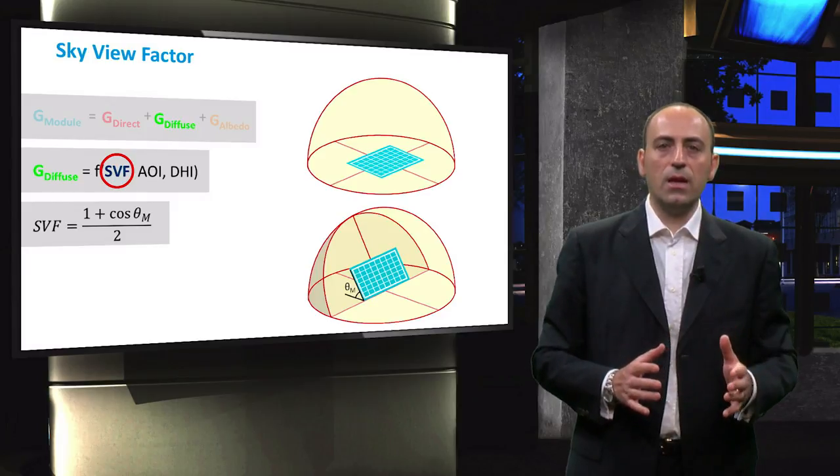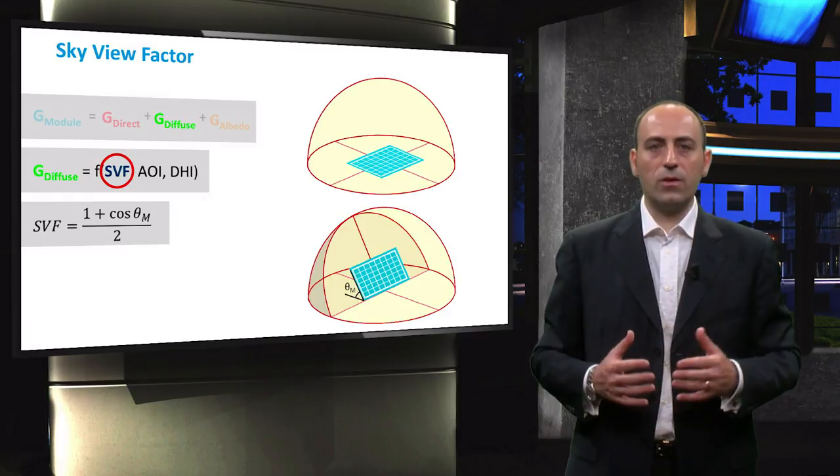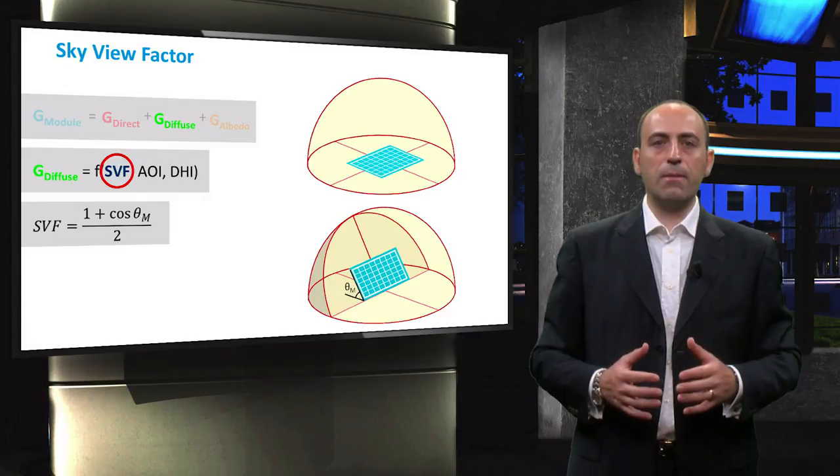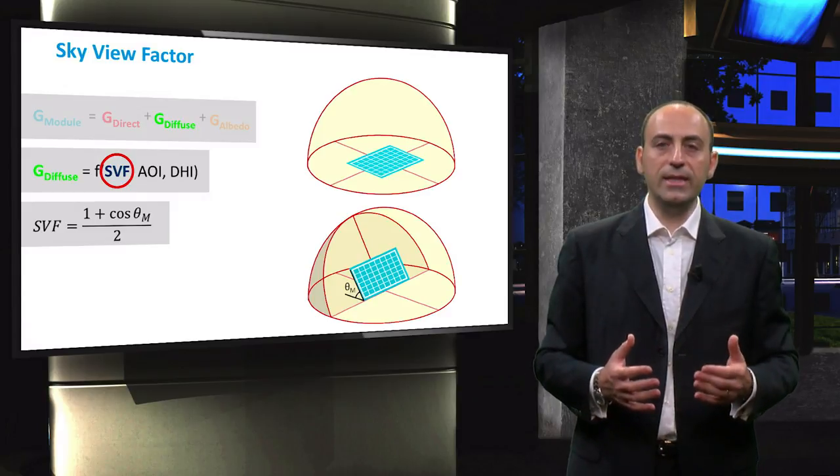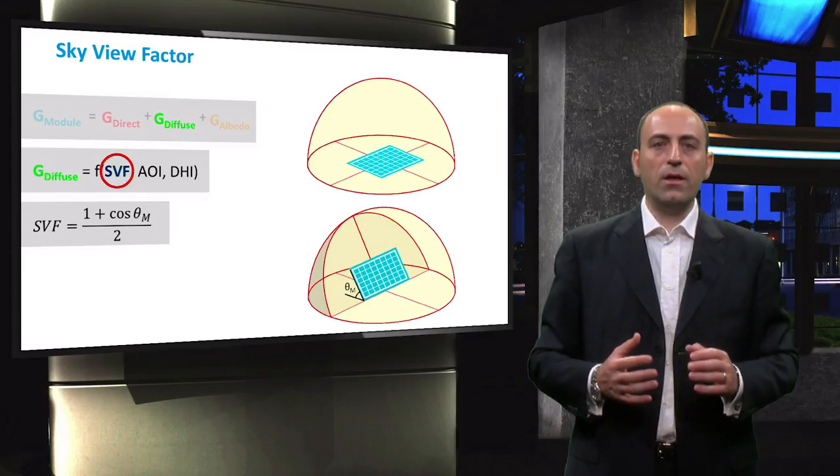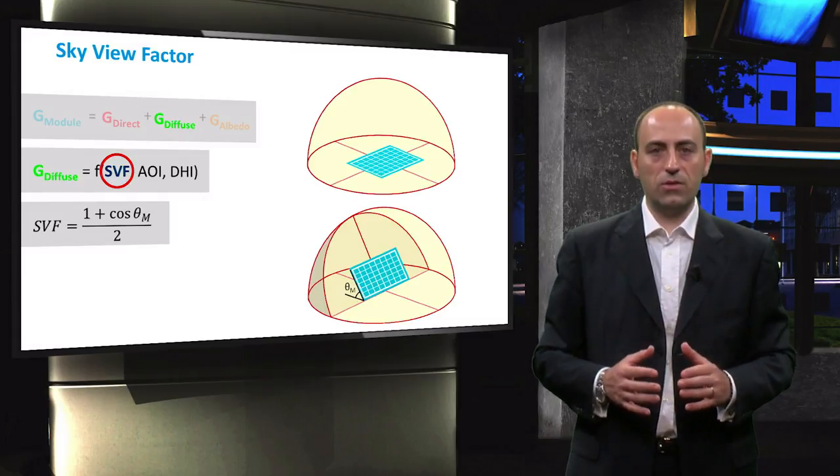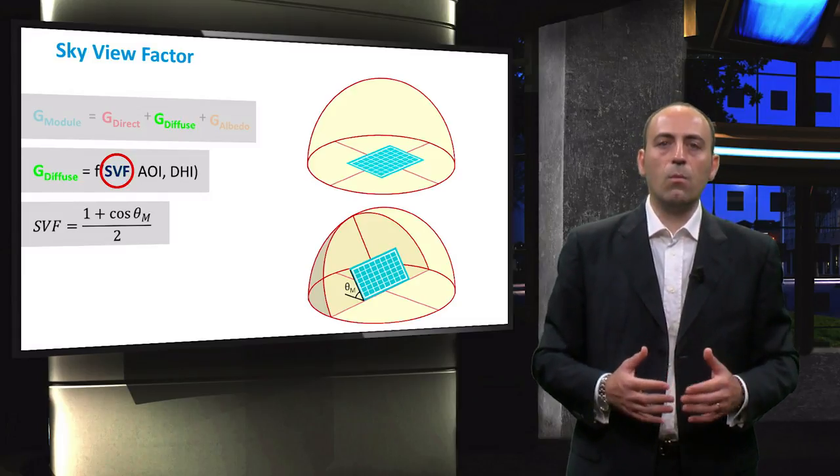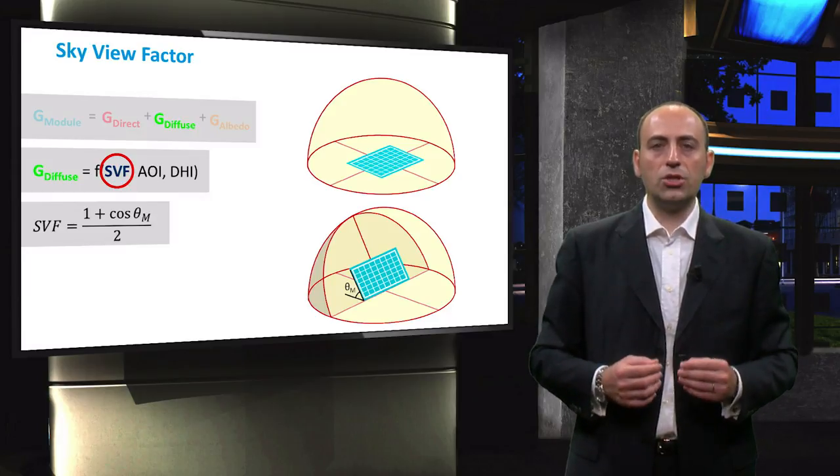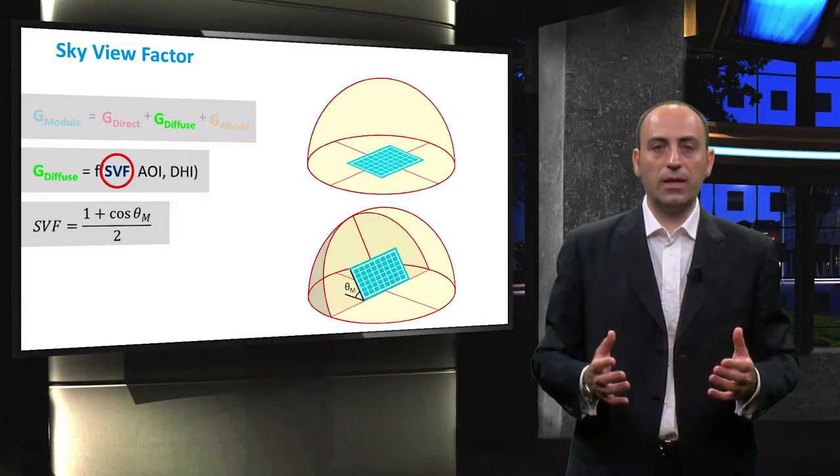As the tilt angle increases, the portion of the sky that the module faces decreases. For example, when the tilt is 90 degrees, then only half of the sky irradiance can be received by the module, and indeed, the cosine of 90 degrees is zero and the equation gives 0.5. Therefore, when the module is flat on the ground, light is incident on the module from the entire hemisphere. On the other hand, when the module is tilted, in order to optimize the direct irradiance, the angle from which light can reach the module is limited and therefore the sky view factor has to be calculated.